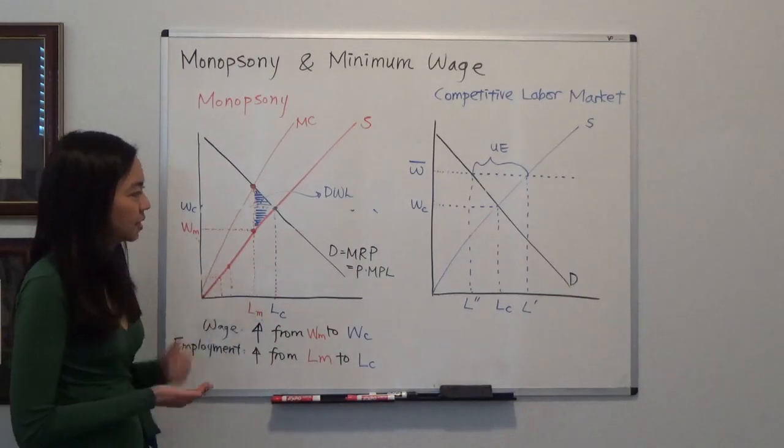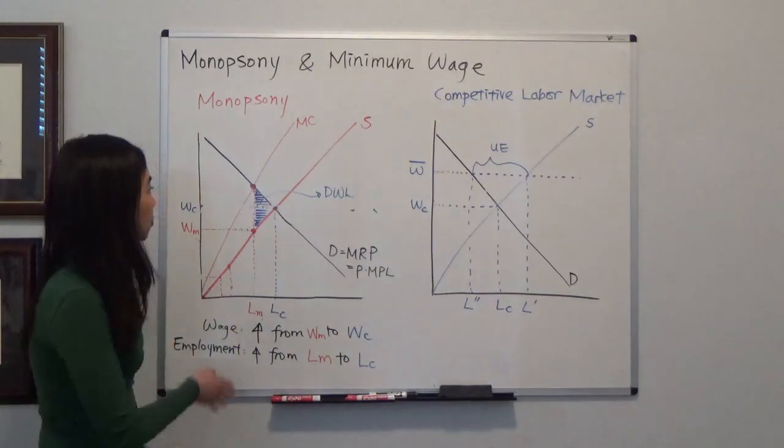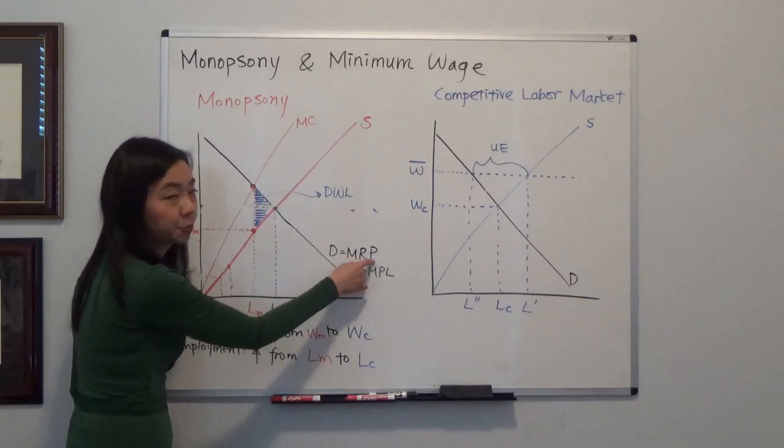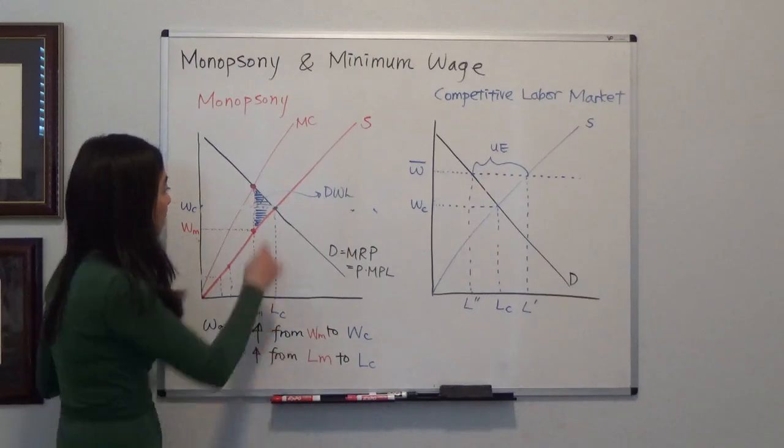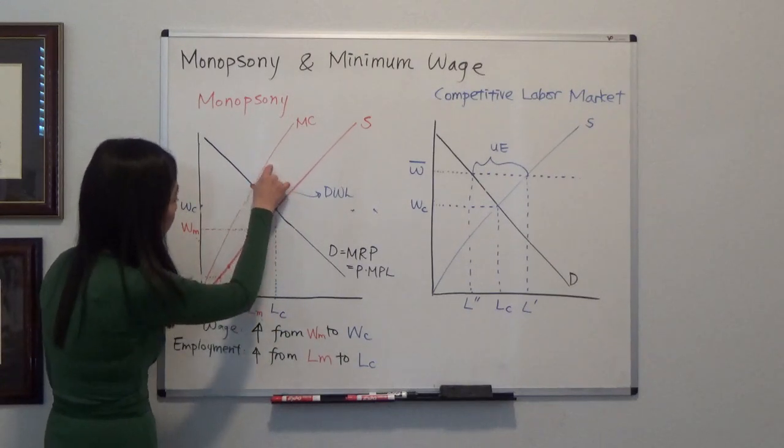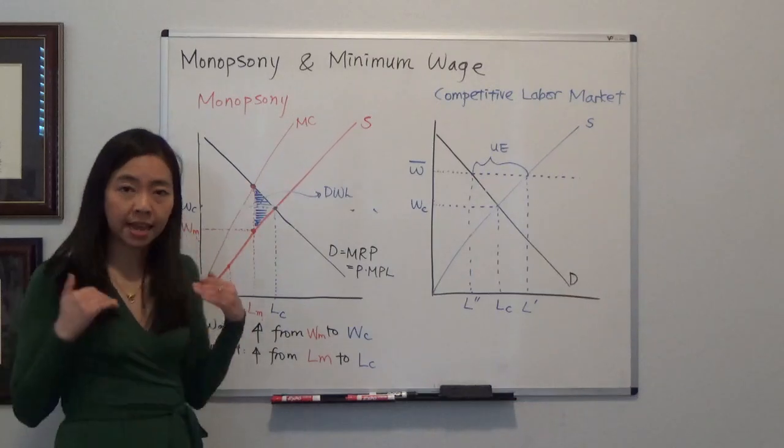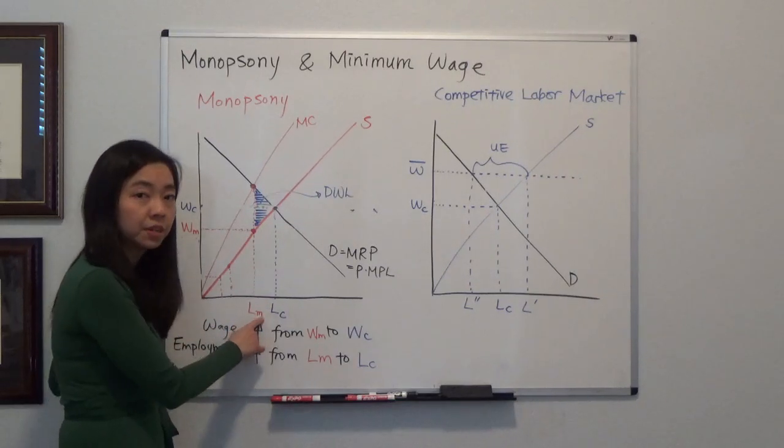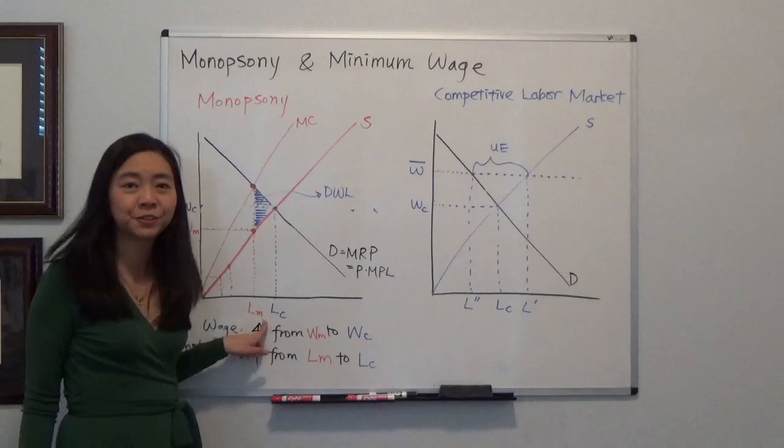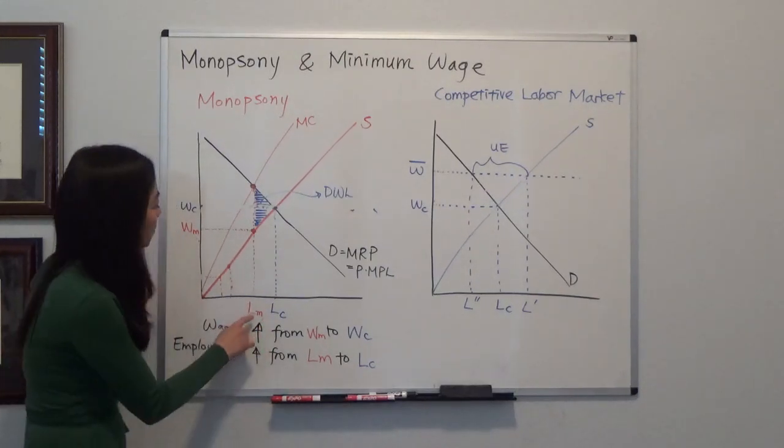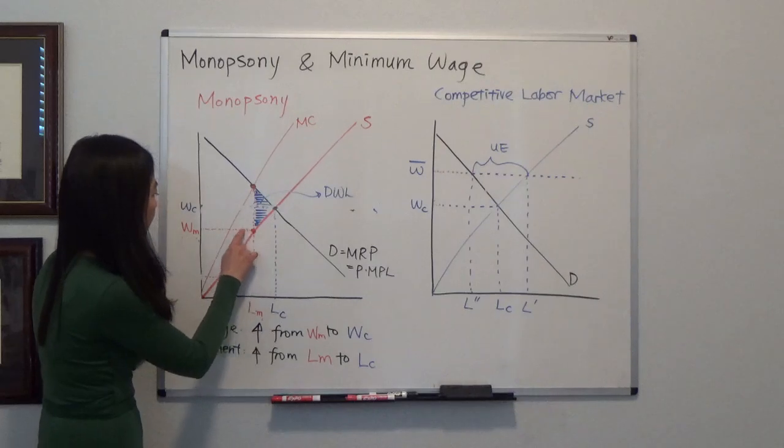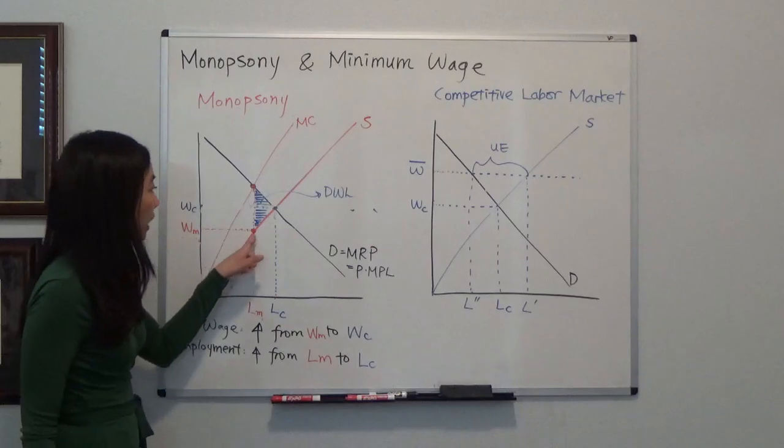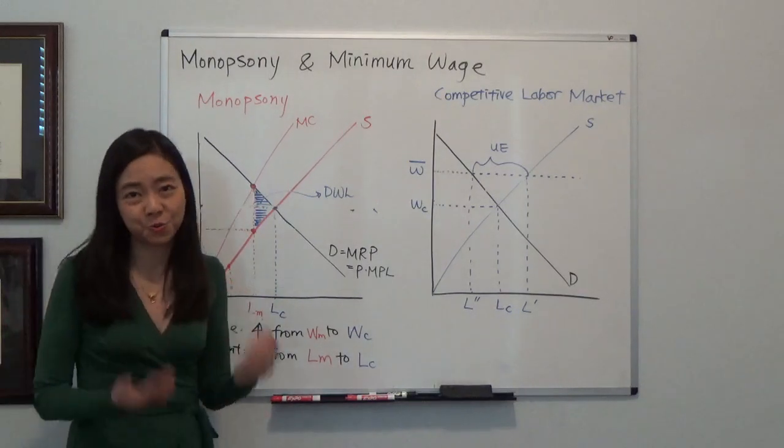So how would this monopsony behave? So we first equate the marginal cost and the marginal benefit. So that will be the marginal revenue product, the marginal cost. At the intersection, the monopsony will decide how many workers it is going to hire. So you move down, you look, it's LM. So the monopsony is going to hire LM workers. And how much will they pay for the workers? They will go back to the supply curve. And the wage is WM.